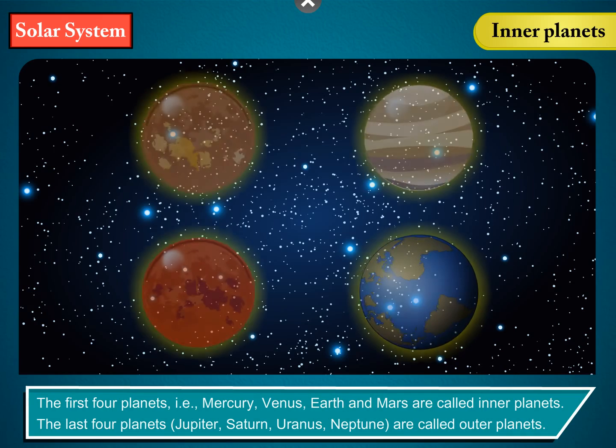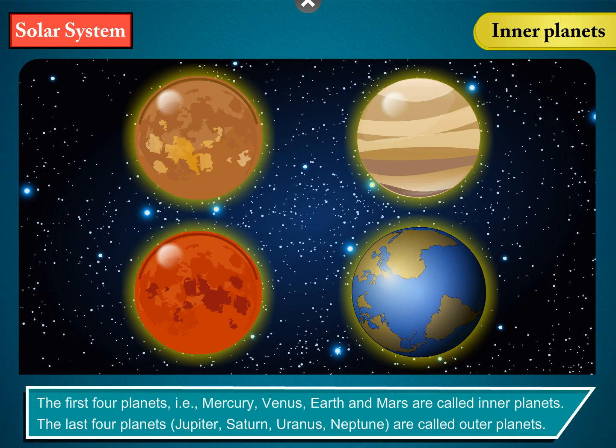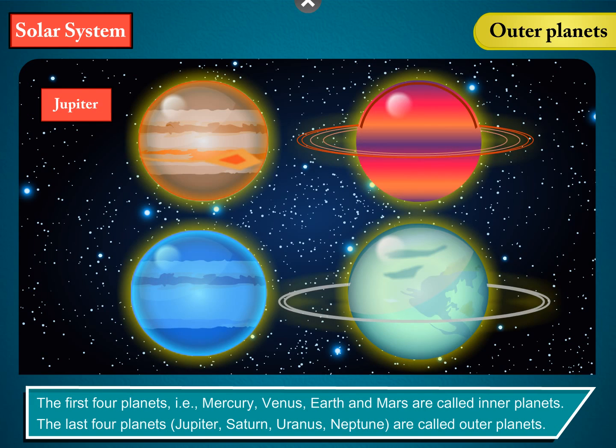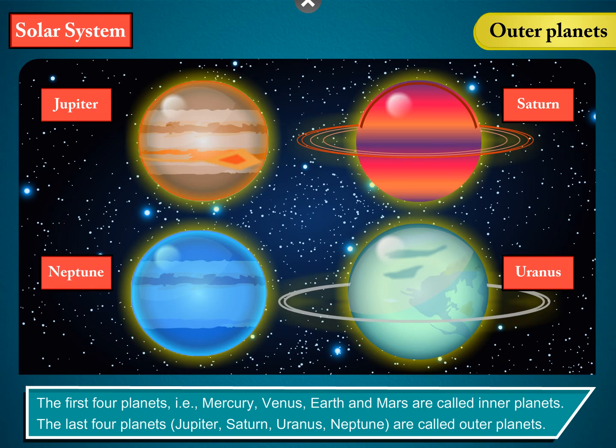The first four planets—that is, Mercury, Venus, Earth, and Mars—are called inner planets. The last four planets—Jupiter, Saturn, Uranus, and Neptune—are called outer planets.